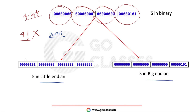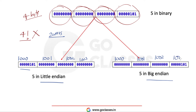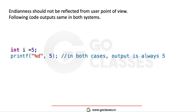In little-endian, the byte ordering is in reverse. So the first byte is the least significant, followed by second, third, and fourth byte. If the address is 1000, 1001, 1002, 1003, then at address 1000 you store the least significant byte. In big-endian, you store directly — at address 1000 you store the most significant byte, going in order through 1001, 1002, 1003.